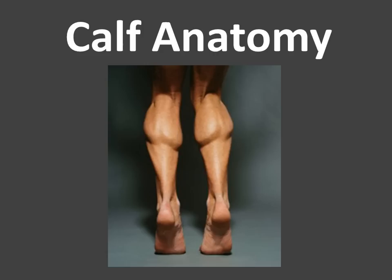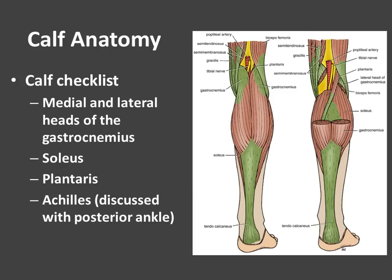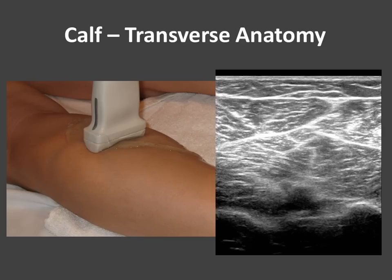So I'm going to start with the calf. When we examine the calf, there's a typical checklist. It includes the medial and lateral heads of the gastrocnemius muscle, deep to which lie the plantaris and soleus muscles and tendons, and then the Achilles — but I'll include that in my discussion of the posterior ankle.